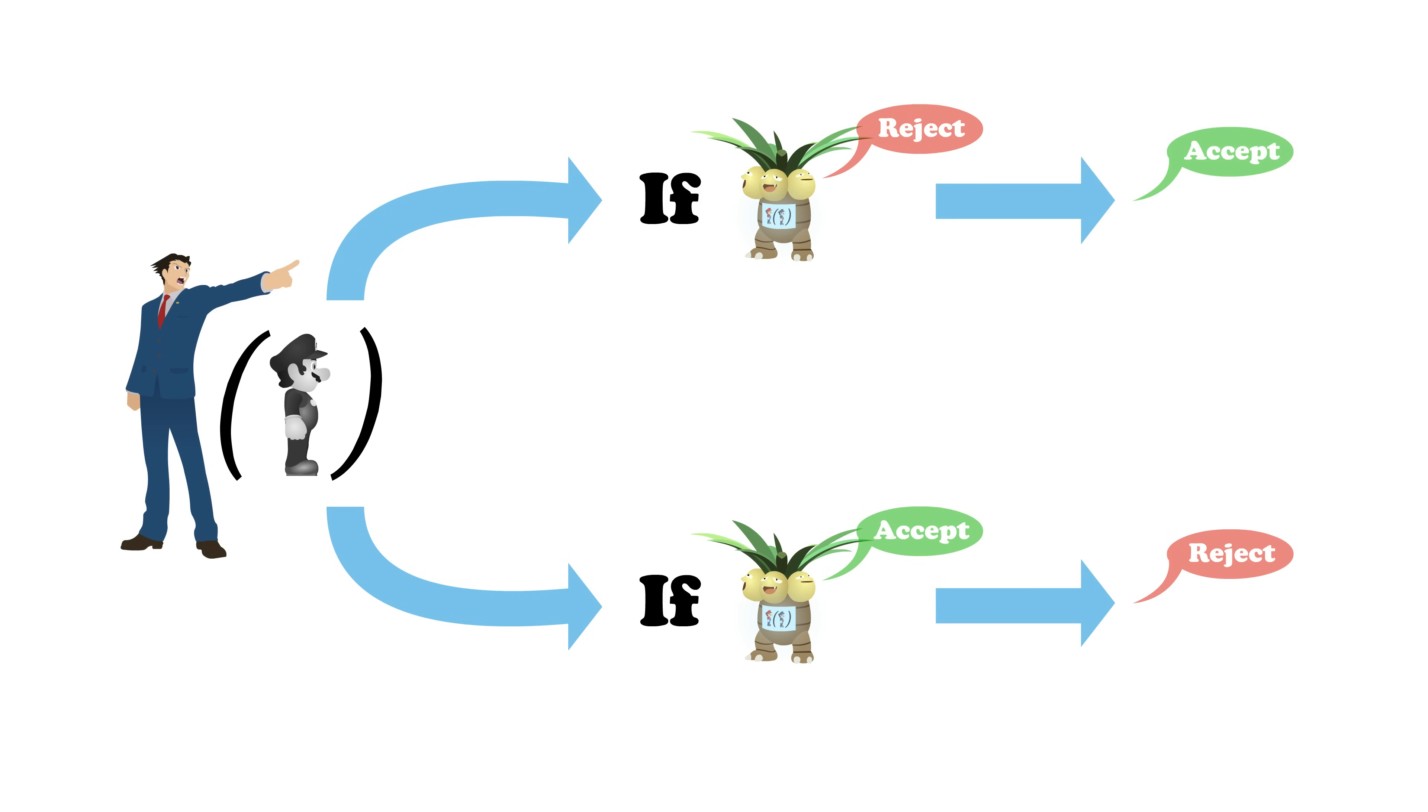If the executor says accept, our contradictor rejects, and if the executor says reject, our contradictor accepts.